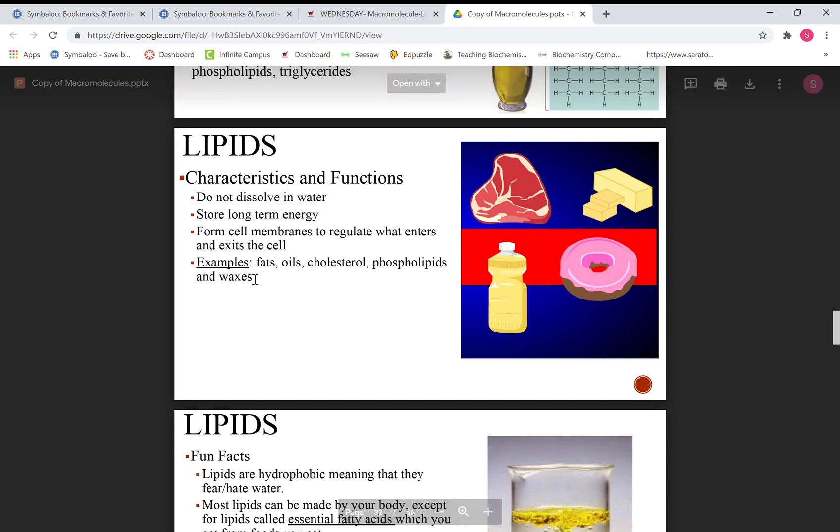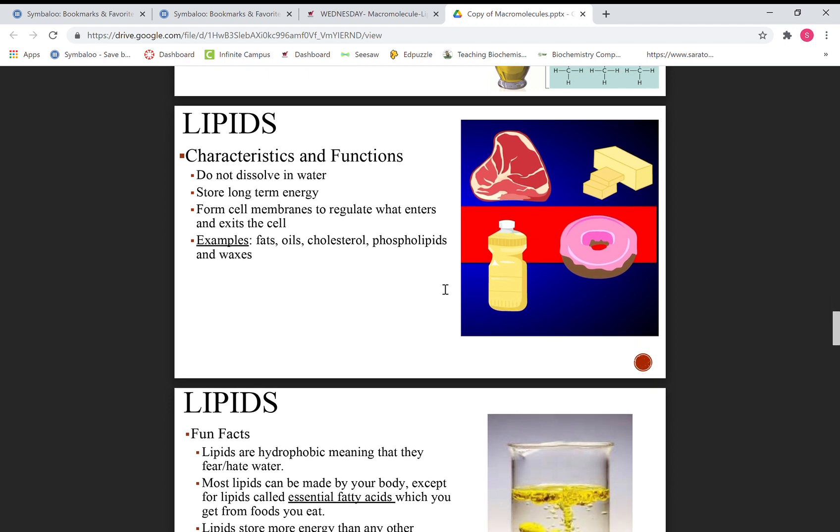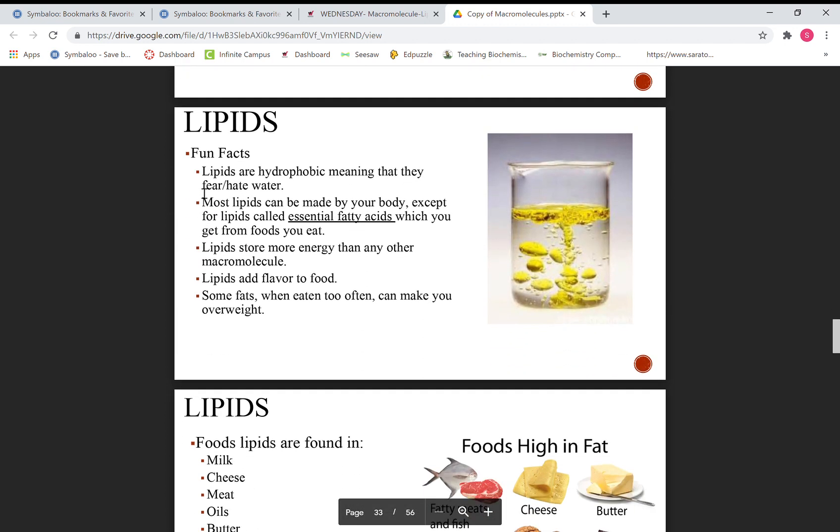They're stored for long-term energy. They help regulate cells, what goes in and out of the cells, the phospholipid bilayer. Examples are fats, oils, cholesterol, phospholipids, and waxes. Some facts about lipids: they don't like water, that's what hydrophobic means. Most lipids can be made in your body except for lipids called essential fatty acids.